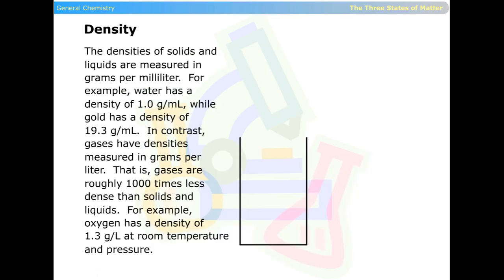Density. The densities of solids and liquids are measured in grams per milliliter. For example, water has a density of one gram per milliliter, while gold has a density of 19.3 grams per milliliter.